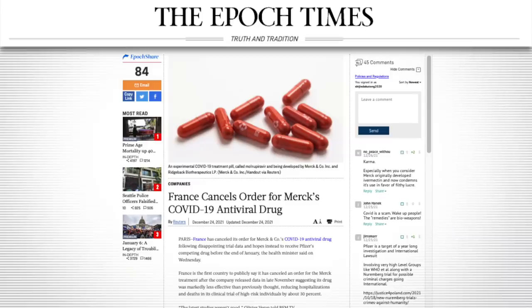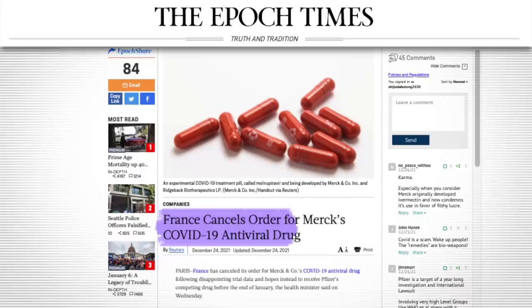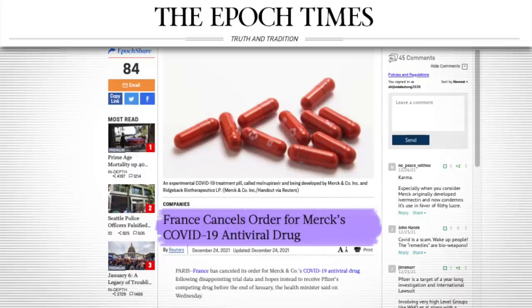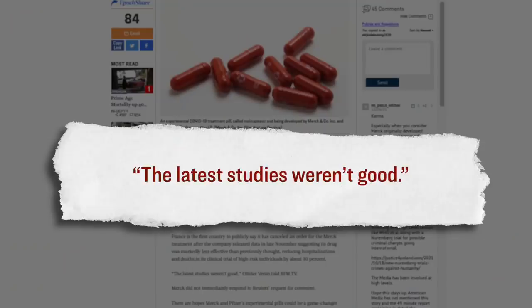Likewise, this type of reaction is not only coming out of India, but also France as well. About two weeks ago, the French government canceled their order of these Merck COVID pills, although they cited a different reason. They did not cite the problem with unborn children or potential problems with muscle or bone growth, but instead, they said that data released back in late November suggested that the drug was markedly less effective than previously thought, reducing hospitalizations and deaths in its clinical trial by about 30% rather than by about 50%, which Merck was claiming initially. The director of the health agency in France said, quote, the latest studies weren't good. And therefore, using this reasoning as their basis, the French government canceled an earlier contract that they placed for 50,000 doses of the Merck COVID pills. So that is what's happening in France and over in India.